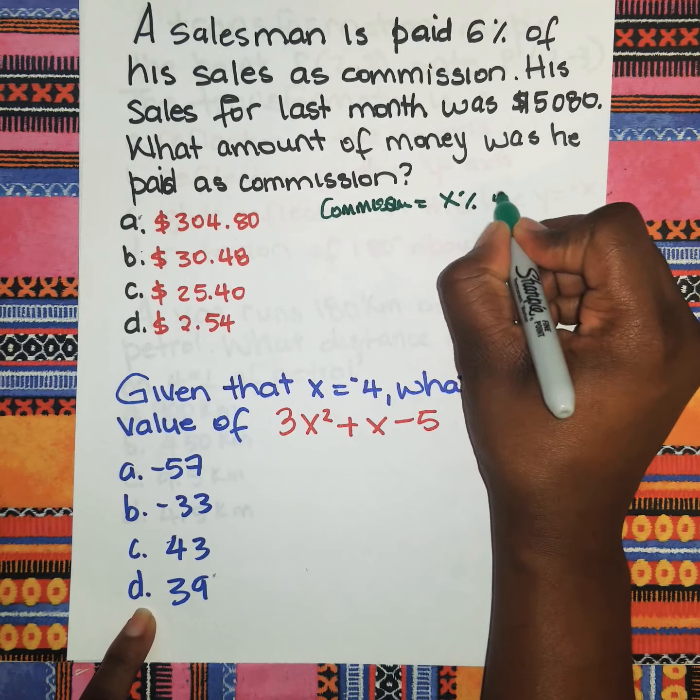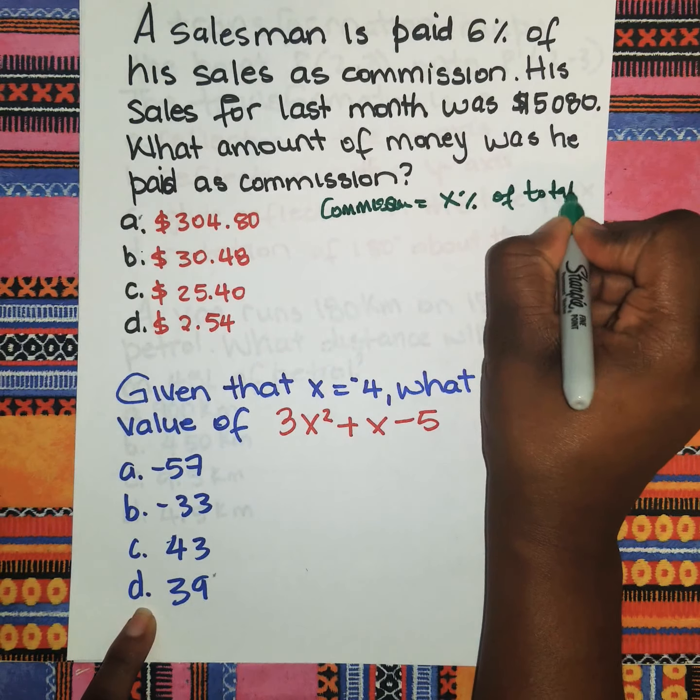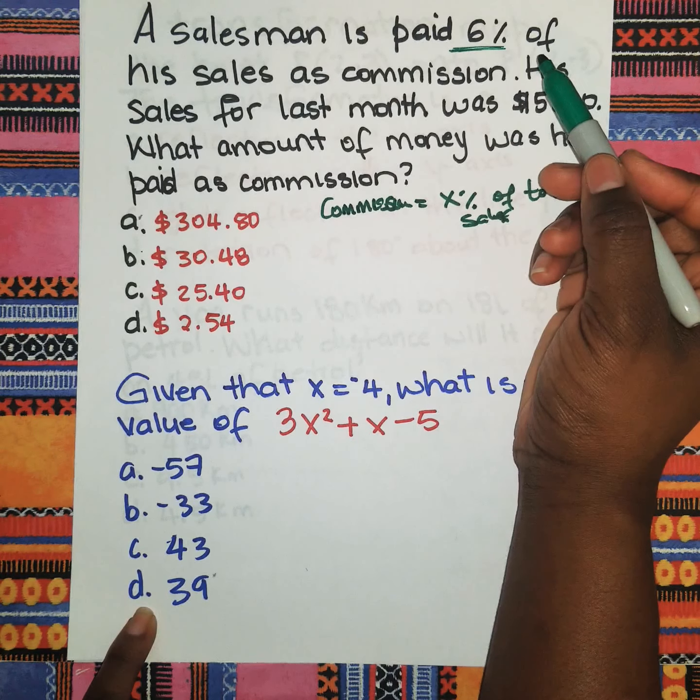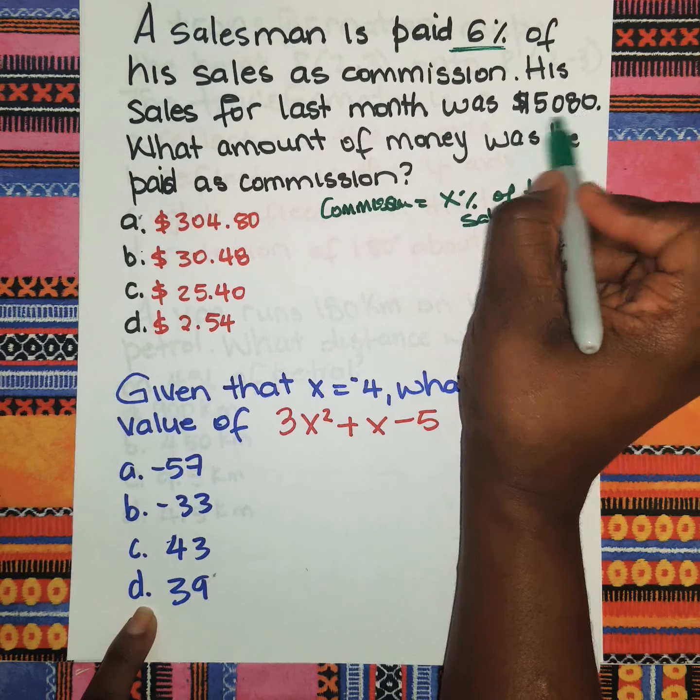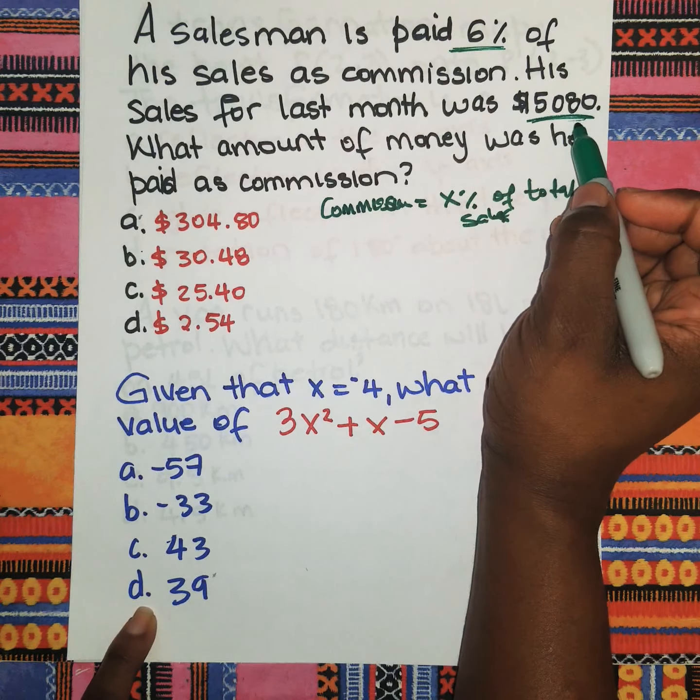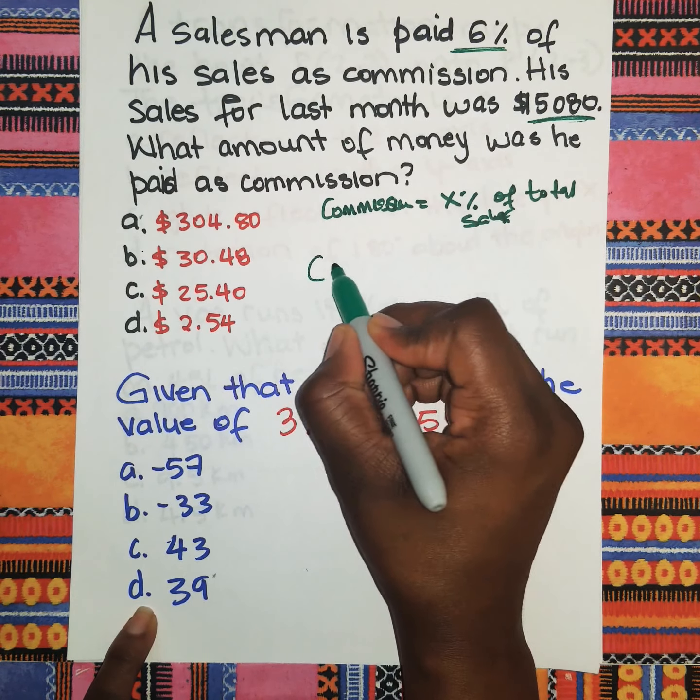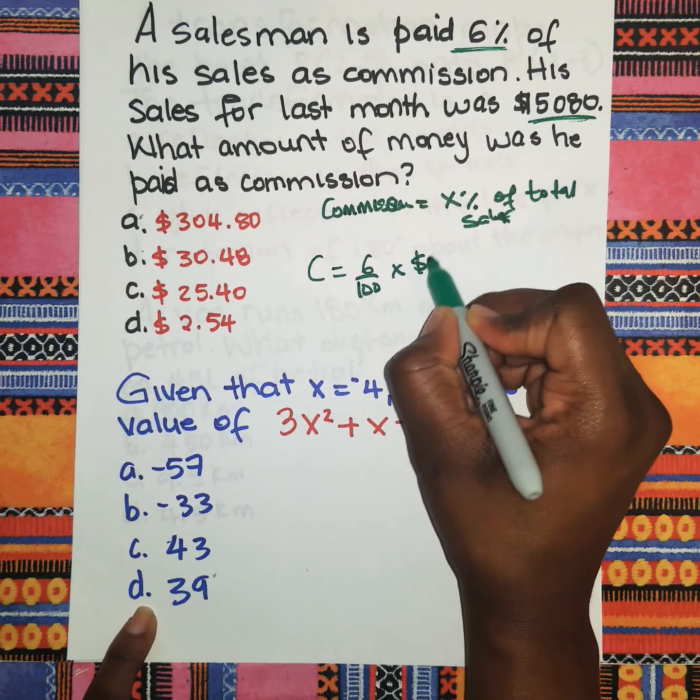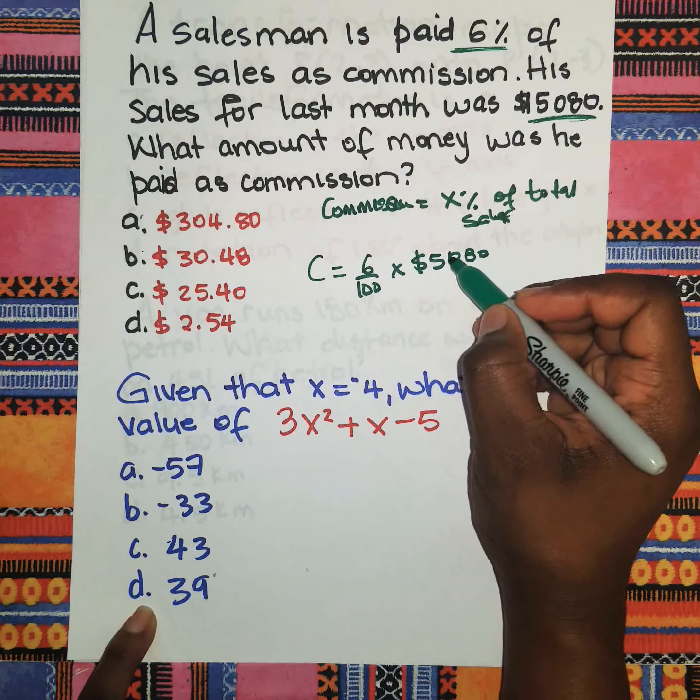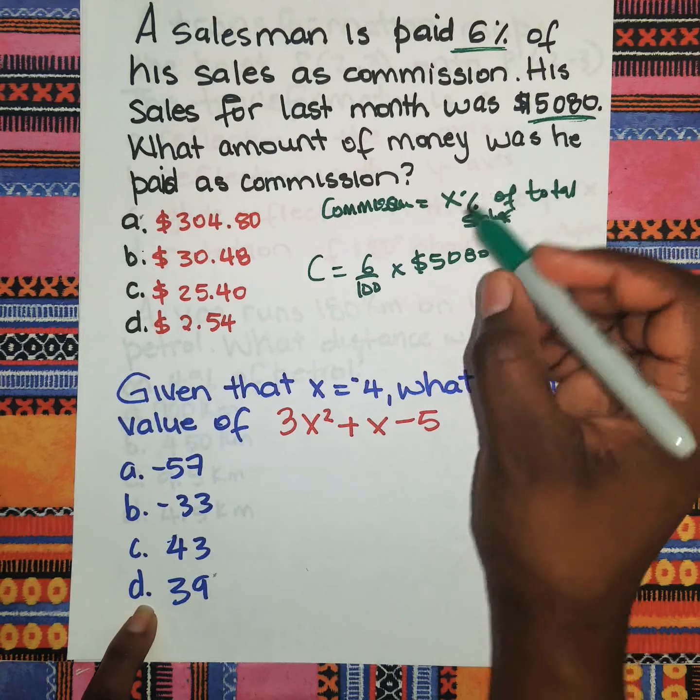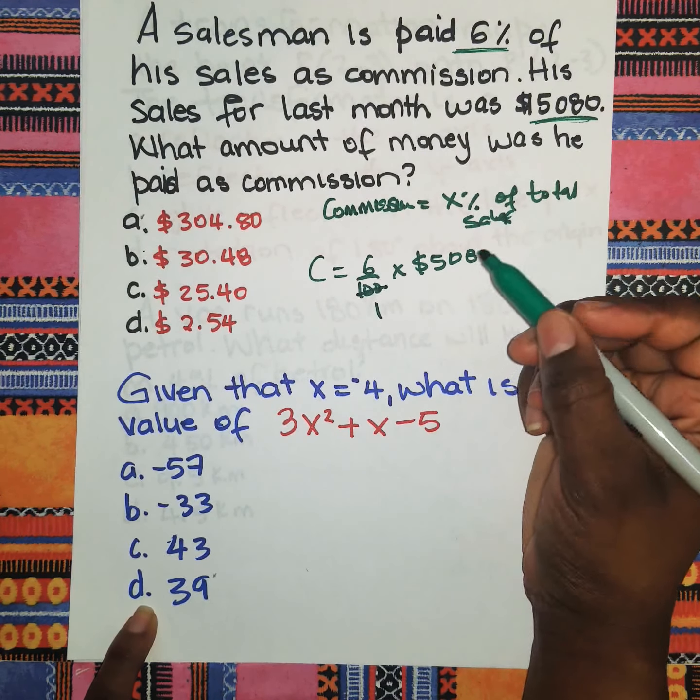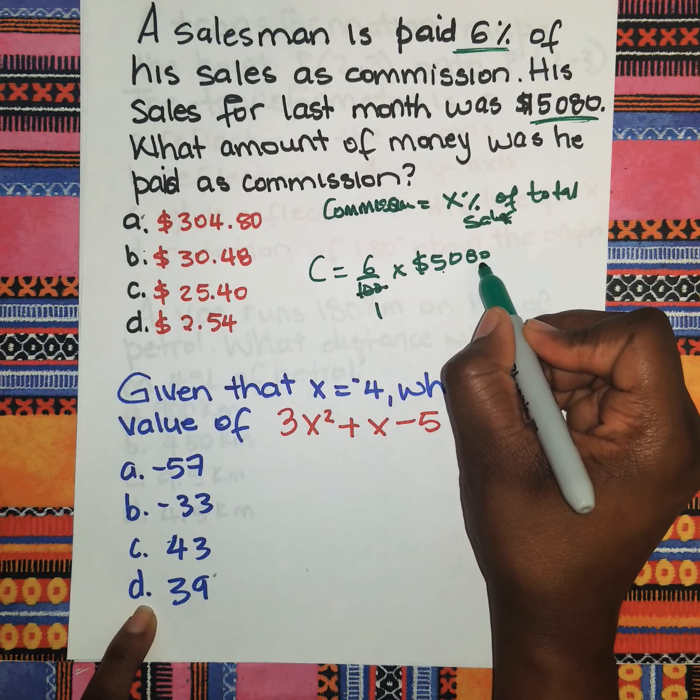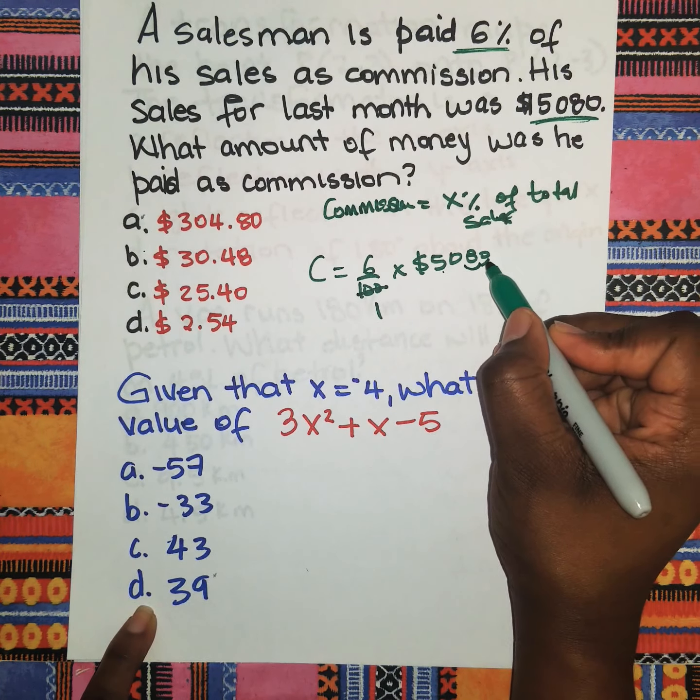Having this, we know that commission is equal to x percent of the total sales. 6% would be the rate of commission that he's getting and the total sale is $5,080. So C is equal to 6 over 100 times 5,080. I'm going to simplify here where 100 into 5,080, moving two decimal places, is going to be 50.8.